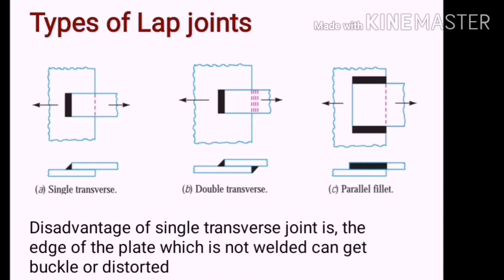In double transverse joint, again the load is in the direction perpendicular to the fillet, but the weld is on the 2 sides. One on the above side of the plate and another on the bottom side of the plate, as shown in figure B. In case of parallel fillets, the load axis is in the direction to the axis of the weld, as shown in figure C.